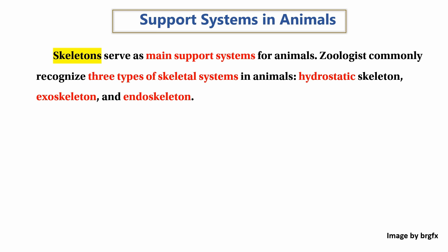Zoology commonly recognizes three types of skeleton systems in animals.